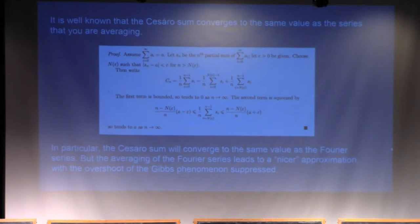And it's pretty well known that the Cesaro sum converges to the same value as your Fourier series. And the intuitive argument for that is, if you go far enough out, you have infinitely many terms that are really close to your limit, and so the terms before that won't really contribute to your average. So in particular, if you have a Fourier series that converges to a function, your Cesaro sum will also converge to that function.